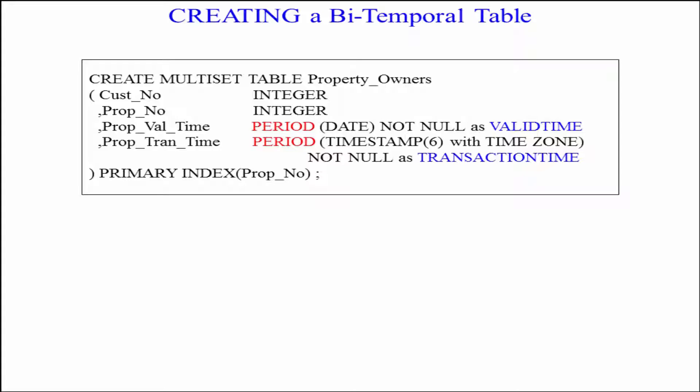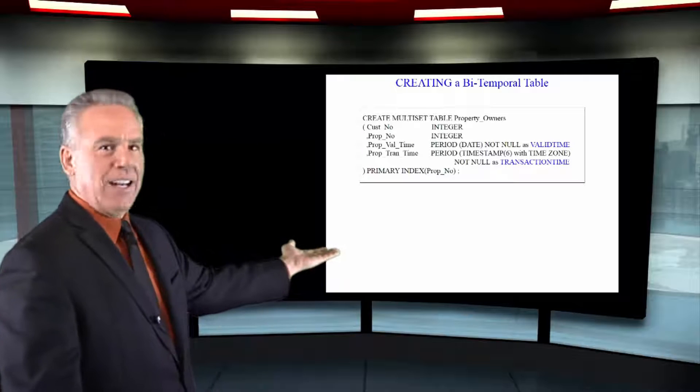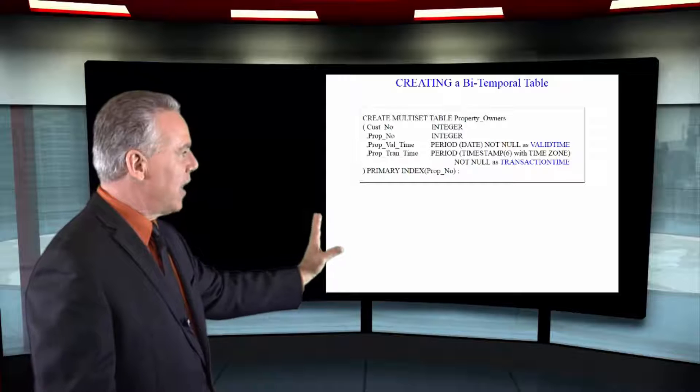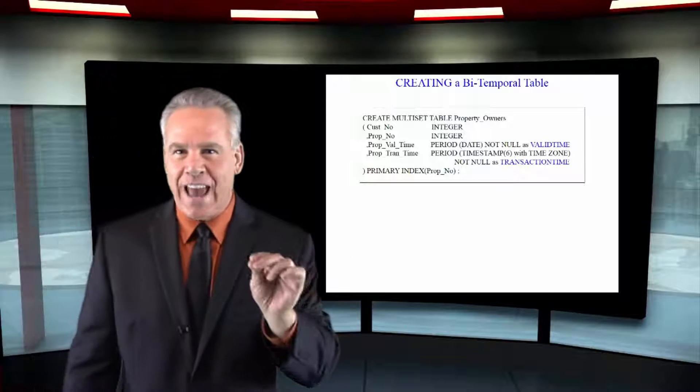Also, notice in blue that I have the keywords valid time. I'm actually giving the column an alias of valid time, and then I'm doing it again and saying I'm giving this column an alias of transaction time.